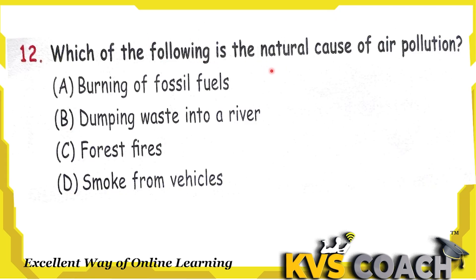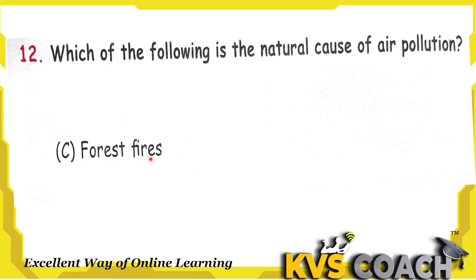Next question: which of the following is the natural cause of air pollution? Option A, burning of fossil fuels — yes it causes air pollution, but it is not natural; we burn it manually. Option B, dumping waste into rivers — this causes water pollution, not air pollution. Option C, forest fires — yes, if a forest catches fire, air gets polluted, and this is a natural cause. Option D, smoke from vehicles — this causes air pollution but is not a natural cause; it is caused by humans. So the right answer is option C, forest fire.